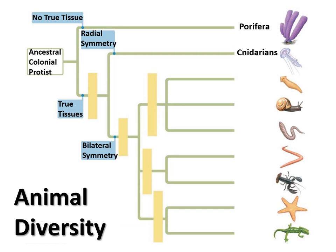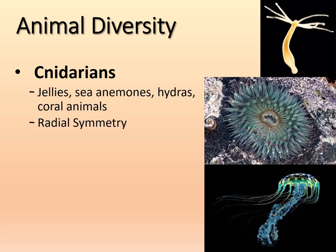Now grouping by body symmetry: the radial symmetry group is the cnidarians. These include jellyfish, sea anemones, hydras, and coral animals. Hopefully many of you have appreciated sea anemones at tide pools at low tide — they're stuck to rocks; that's the middle picture. They have a little mouth and anus opening in the middle. We also have jellies, which are beautiful and diverse, and the top picture is a hydra. All have radial symmetry — you can cut them into similar pieces.